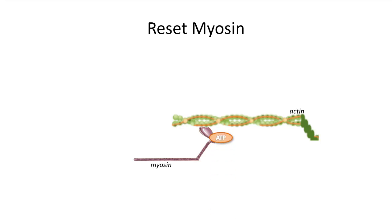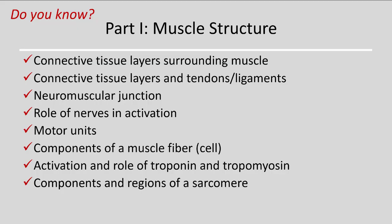If there is no ATP — as occurs in death — myosin remains attached to actin, and this is what rigor mortis is. With ATP present, myosin can be reset. When ATP is hydrolyzed to ADP and inorganic phosphate, the cross-bridge is energized and ready to go again — like setting a mouse trap — with energy imparted into the cross-bridge during the resetting of the head.